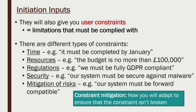More generally, constraint mitigation is how we adapt as a project manager to ensure we aren't breaking any constraints. If we break them, we may not get paid or may lose our jobs. For example, to meet a January deadline, we'd map out the exact timescale and use a Gantt chart with milestones. If we've got a budget of no more than £100,000, we might limit staff to five members rather than fifty, to stay within that budget.